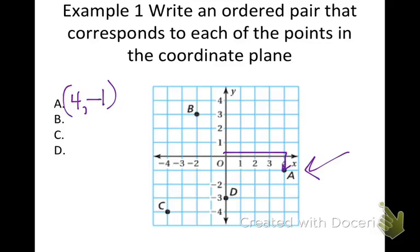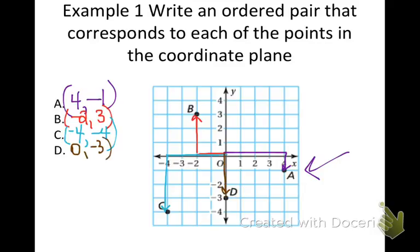Now let's do B. B is negative 2 and then positive 3. So B is negative 2, positive 3. Let's look at C: to get to C I go negative 4 and down negative 4. So C is negative 4, negative 4. And D: I didn't go left or right, I stayed at 0 and then came down to negative 3. So my coordinates are 0, negative 3. If you need more examples, there are different examples in your textbook on page 276, example 1.